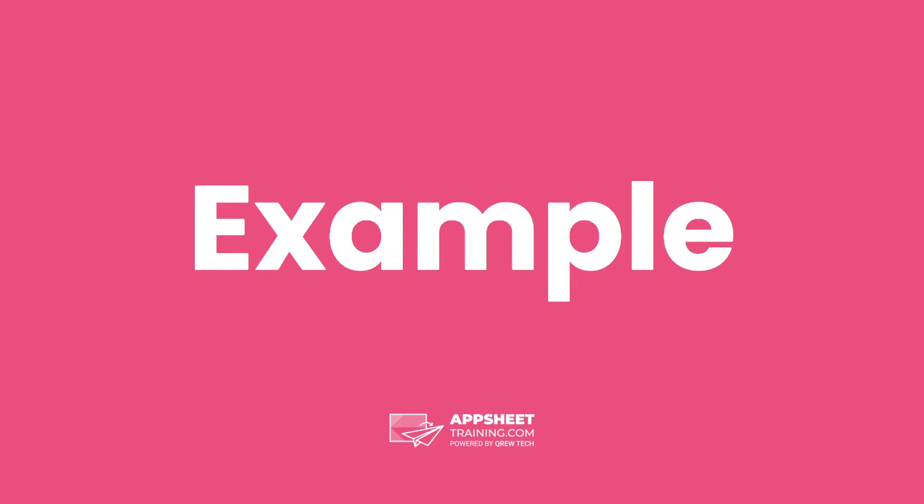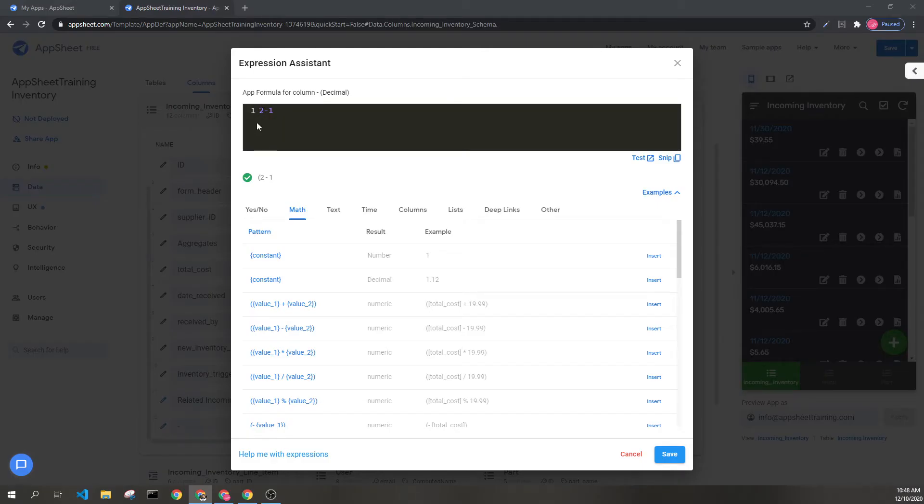Let's look at some examples. Here we can see two minus one, which would result in one. This generally will result in a number data type, but all numbers can be held as decimals. It will just result in 1.0.